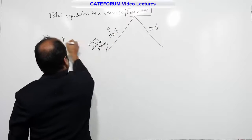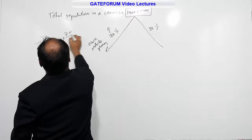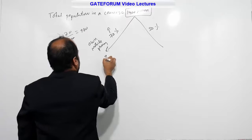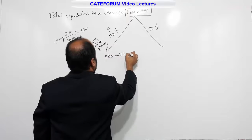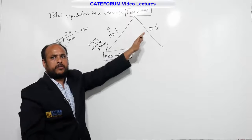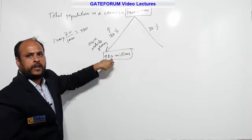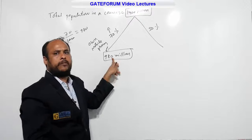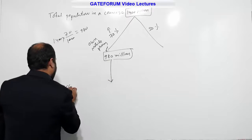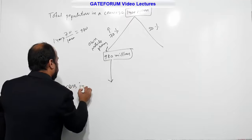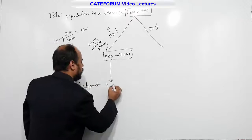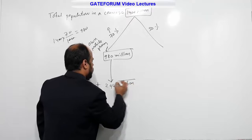1400 into 70%, that is 70/100 — two zeros cancel — gives 980 million. However, this calculation is not required for this problem. Among the mobile phone owners, only 294 million access the internet. This value is directly given, so internet users = 294 million.